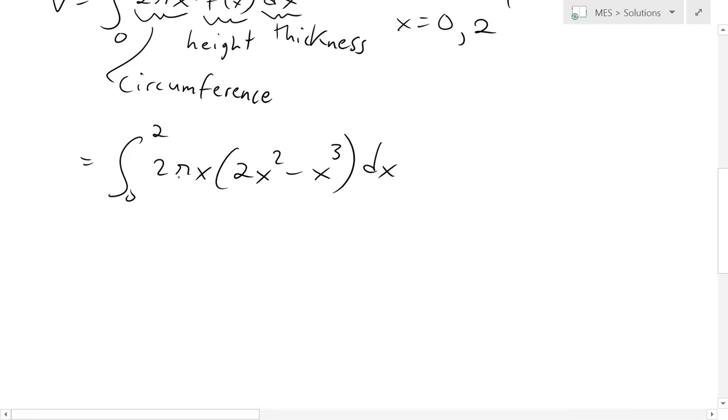So to solve this, we'll take this out of there and basically put this x multiplied inside. We get 2 pi integral from 0 to 2 of 2x cubed minus x to the 4 dx.